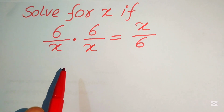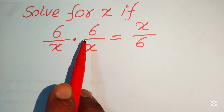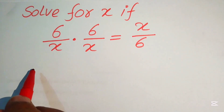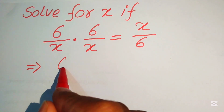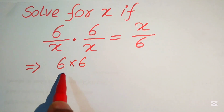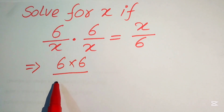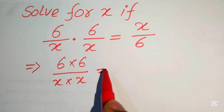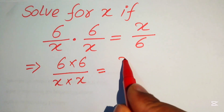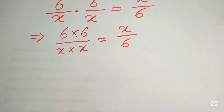First we focus on the left-hand side. We see that 6 is multiplied two times, so we write it as 6 multiplied by 6, divided by x multiplied by x. This equals x/6.